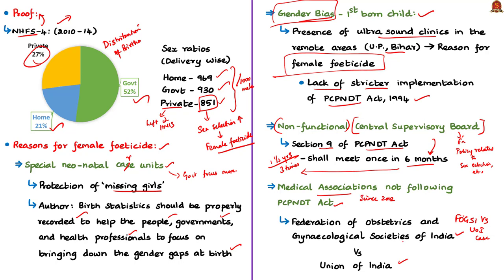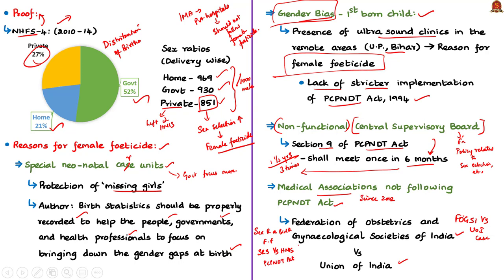Finally, the author states that the Indian Medical Association must ensure private hospitals do not follow the practice of female feticide, since it discriminates against girls even before their birth and allows private hospitals to profit from this discriminatory practice. Key takeaways from this editorial include: sex ratio at birth, female feticide, discrepancies in SRS vs HMIS data, and the need to strictly follow the PCPNDT Act. If you get a main question on female feticide, use points from this editorial.